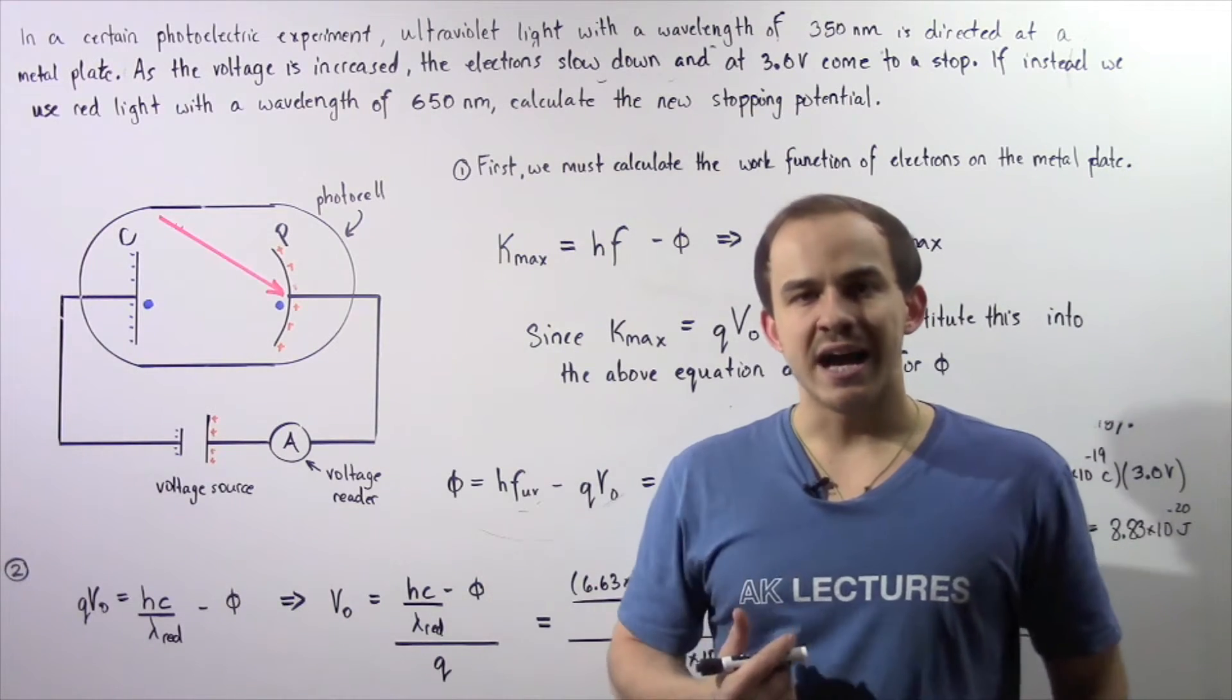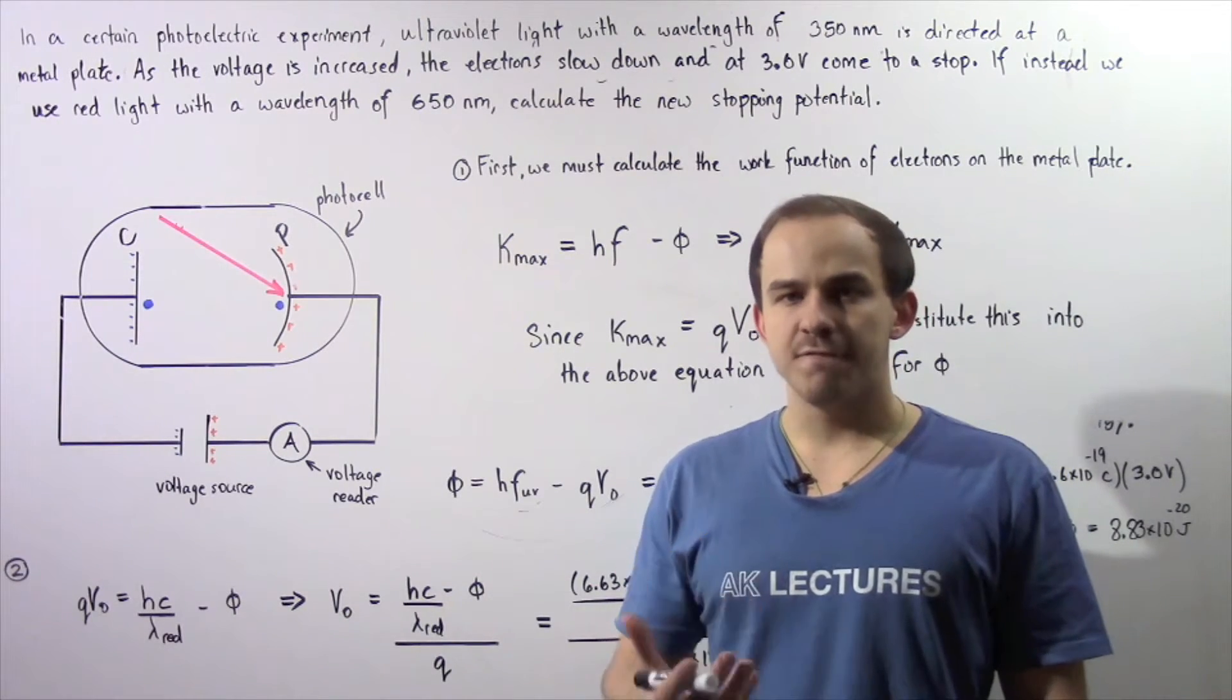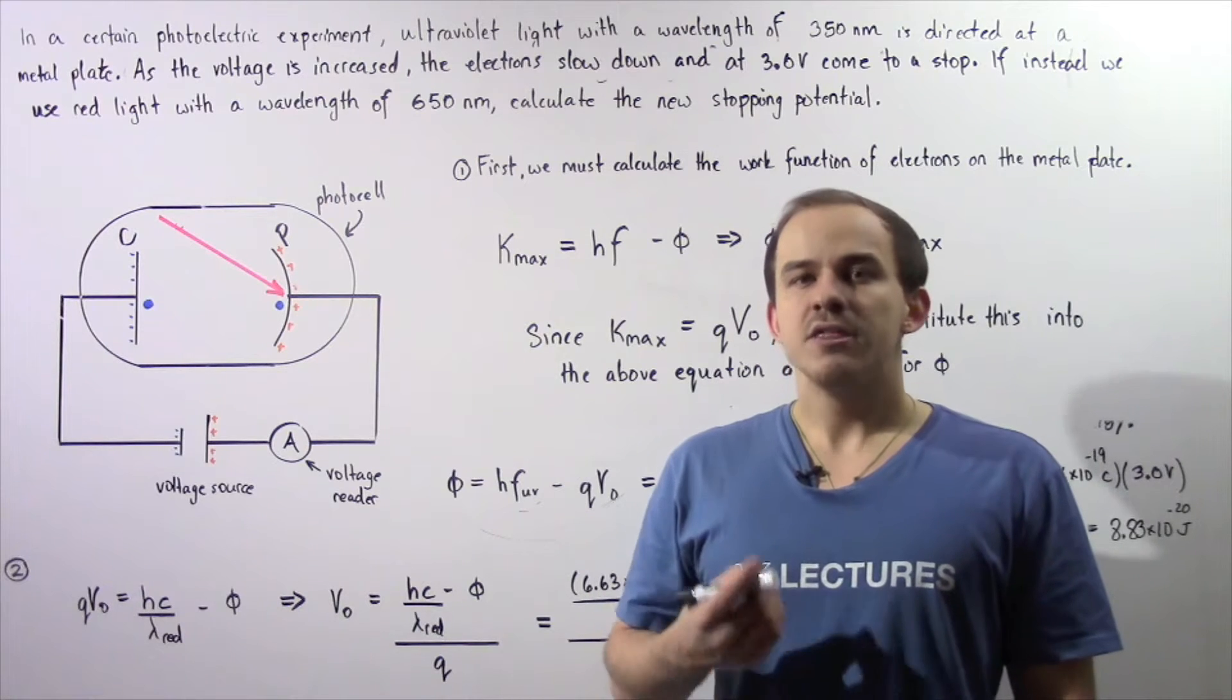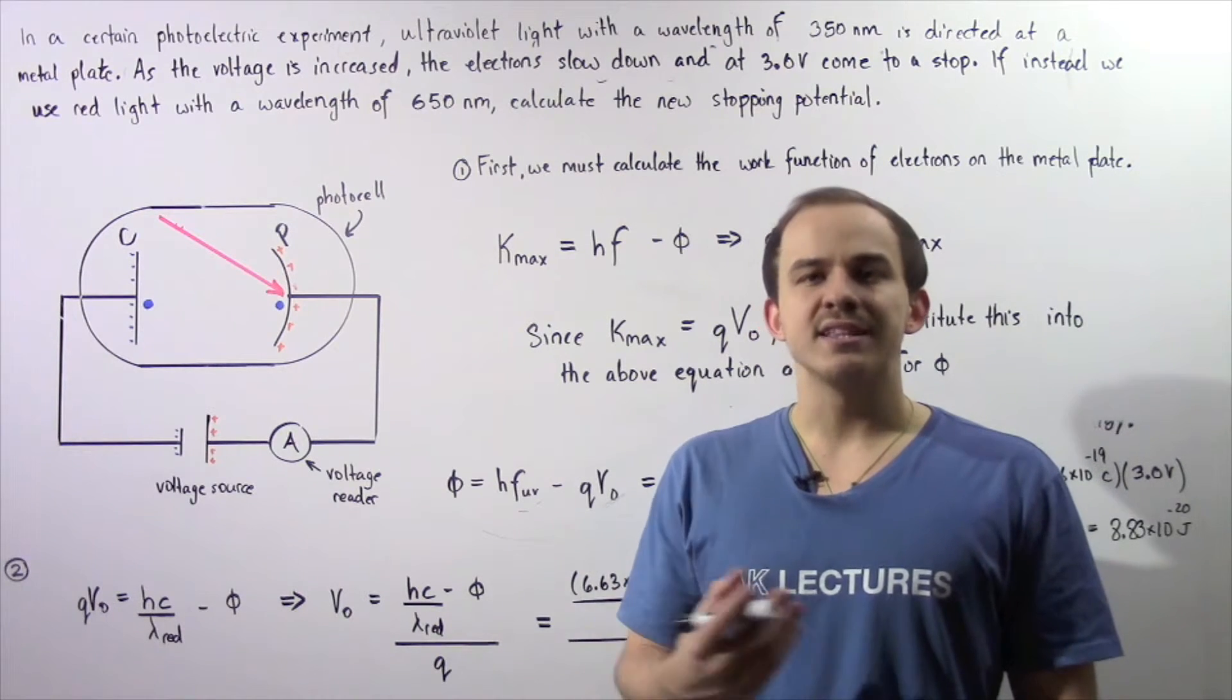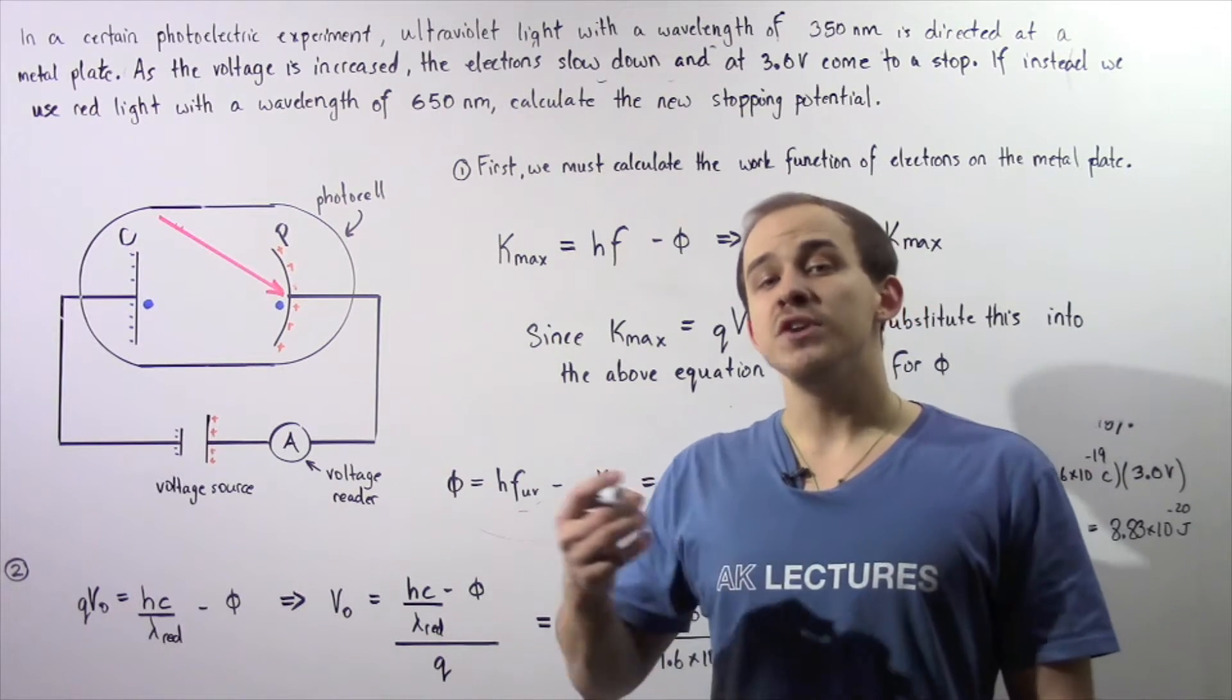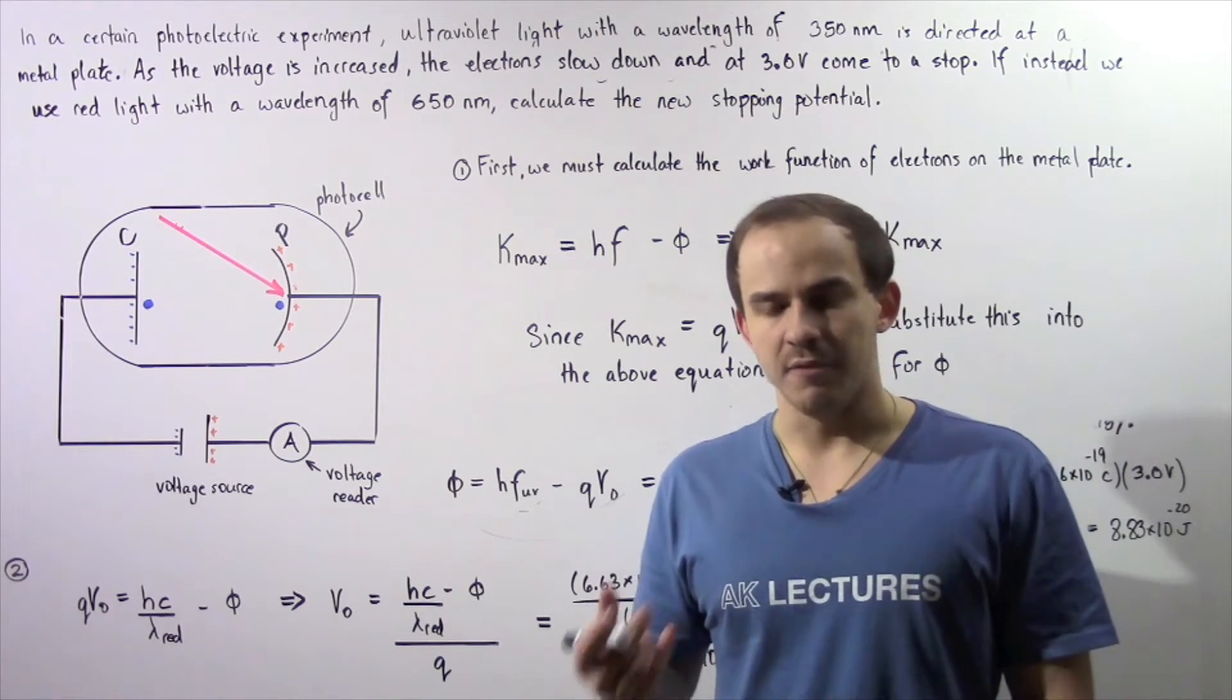In the previous lecture, we discussed the concept known as the stopping voltage, which is basically the voltage that is required to stop electrons from moving across the two plates in a photocell.